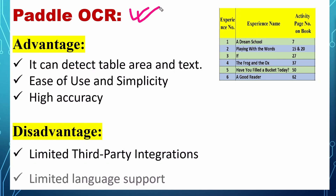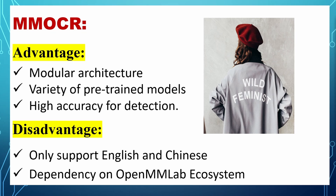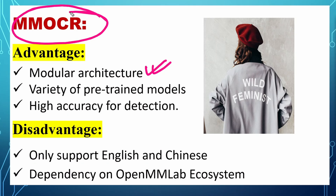PaddleOCR has the capability to detect tables inside images, and its advantages include ease of use, simplicity, and high accuracy. Its disadvantages are limited third-party integration and limited language support. MMOCR has a modular architecture, a variety of pretrained models, and high accuracy for detection. Its disadvantages are that it only supports English and Chinese and has a dependency on the OpenMMLab ecosystem.